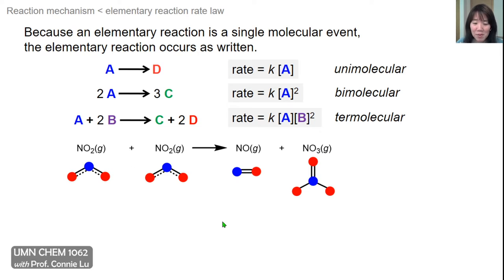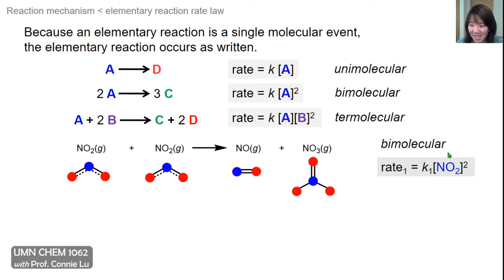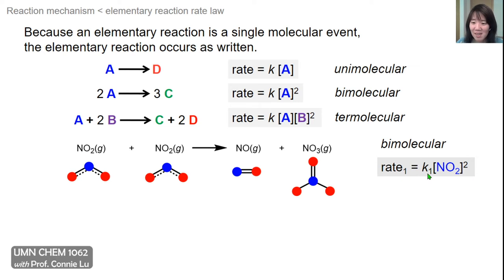Here's a specific example of an elementary reaction from the proposed mechanism. This was the first step where two molecules of NO2 react to give NO and the intermediate nitrate radical. We can write a rate law for this reaction — it is bimolecular, so the rate would have the concentration of NO2 squared. The subscript 1 refers to the first step, so K also has a subscript 1, referring to the rate constant of this first step.